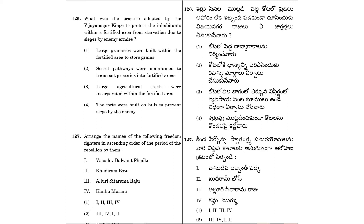Question 126: What was the practice adopted by the Vijayanagara kings to protect the inhabitants within a fortified area from starvation due to sieges by enemy armies? Option 3: Large agricultural tracts were incorporated within the fortified area.